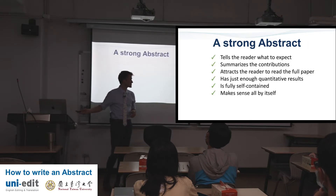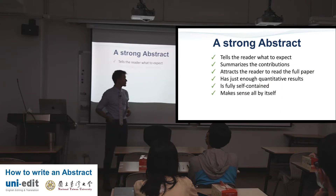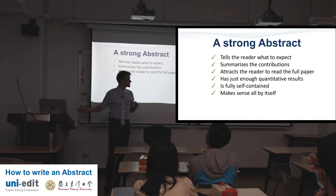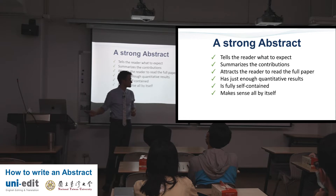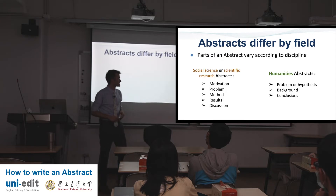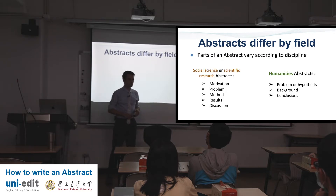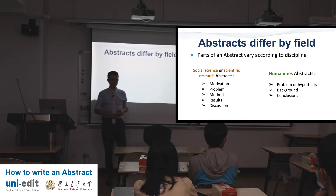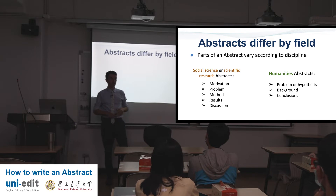A strong abstract — quick list — tells the reader what to expect, summarizes the contributions, attracts the reader to read the full paper, has just enough quantitative results, and is fully self-contained, making sense all by itself. Abstracts differ by field.